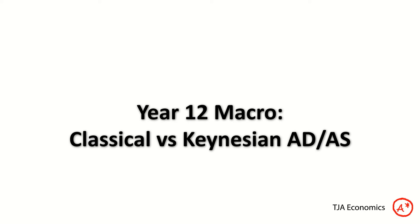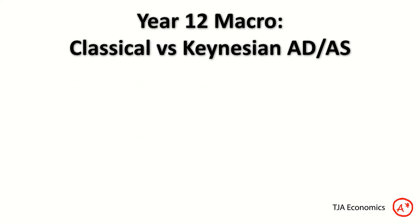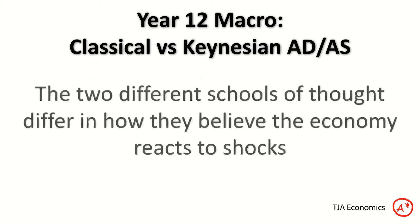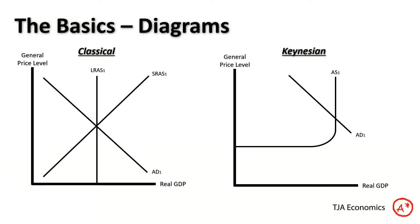Hello everyone, welcome to this TGA Economics video. Today we're going to be looking at a classic Year 12 macroeconomics topic: classical versus Keynesian ADAS analysis. This is one of the topics that students get quite confused about — not so much using the diagrams, but specifically the difference between the two schools of thought and why they have those different schools of thought.